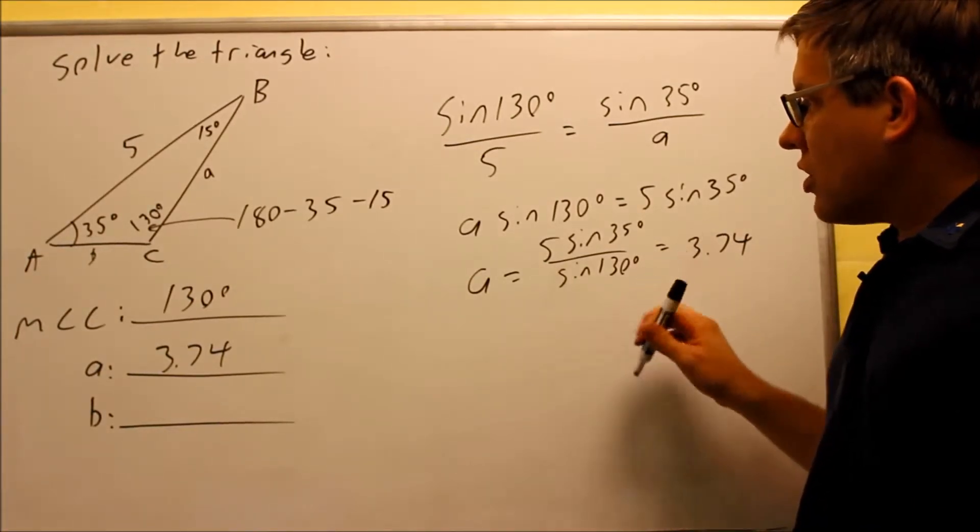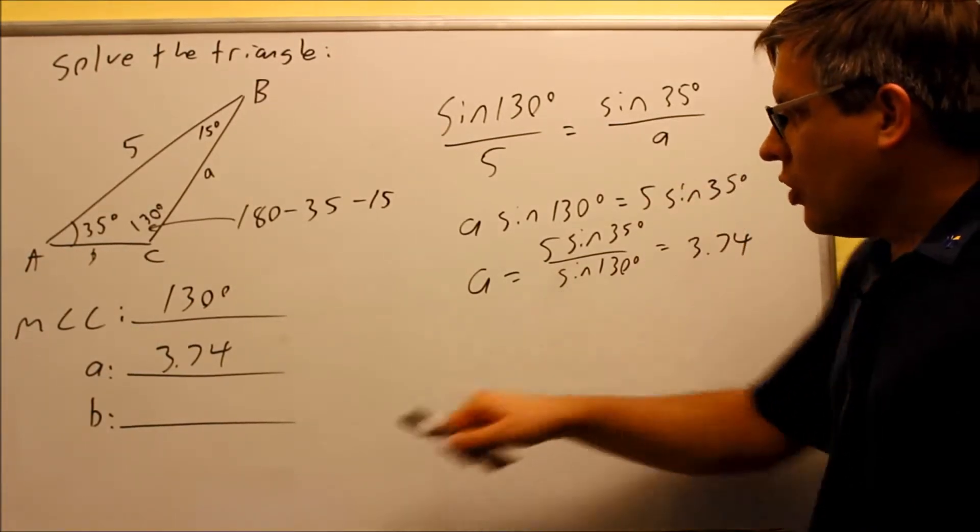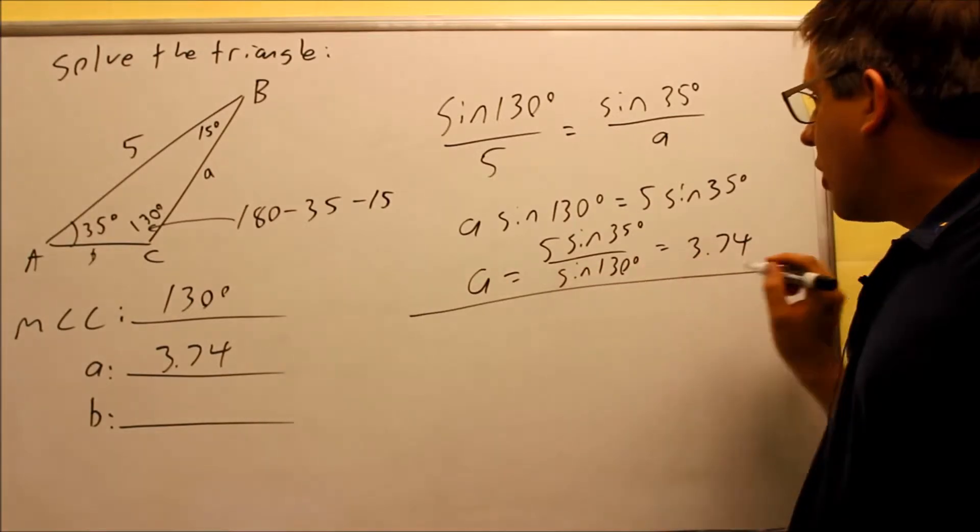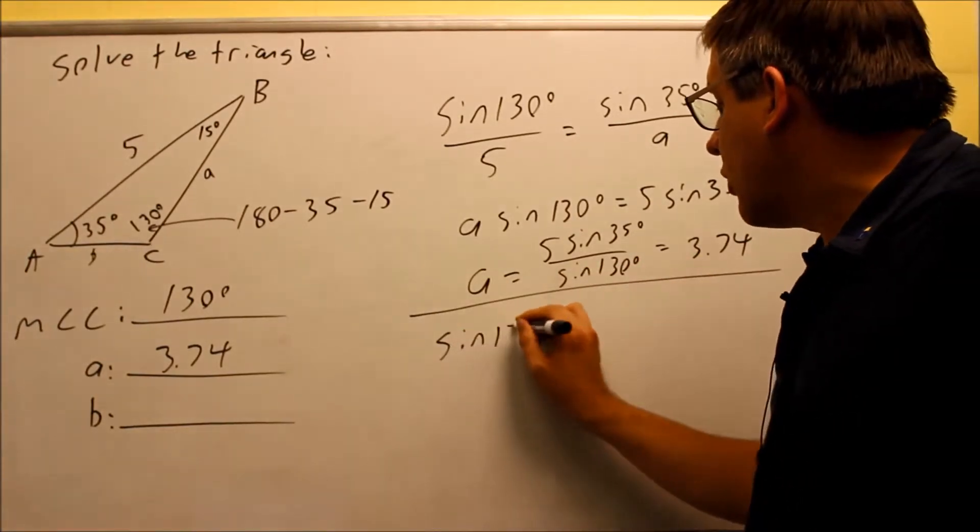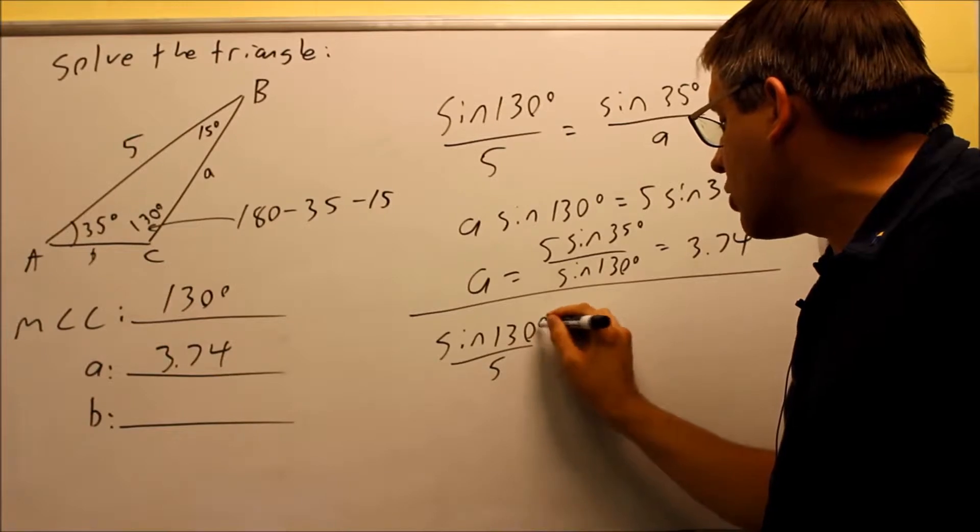Now that we have that one, we need to use another ratio in order to solve for b. We're going to still start with sine 130 over 5. That's our given ratio.